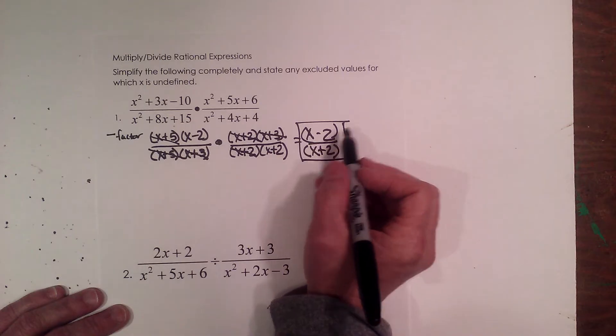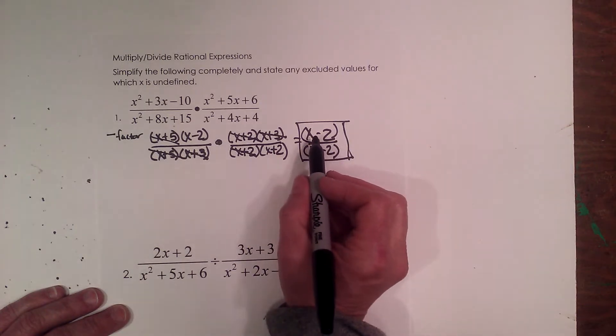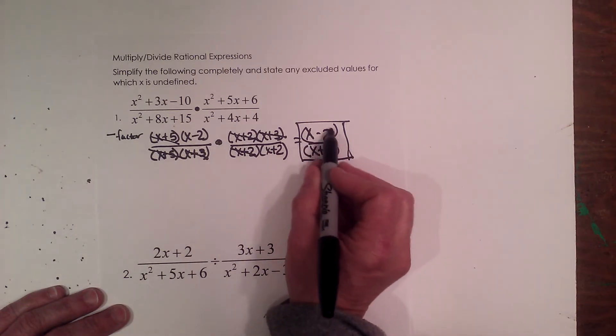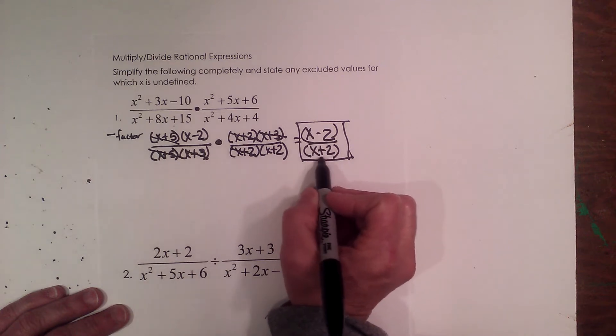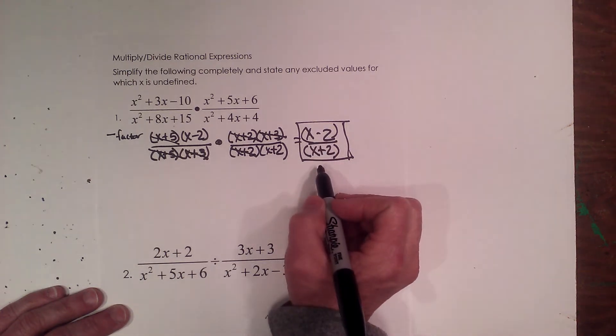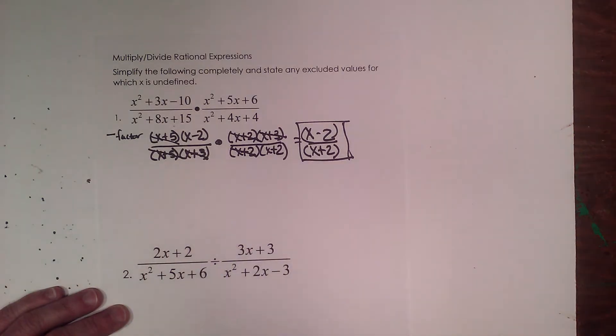And the way you can check it is pick a number. For example, if x is 10, 10 minus 2, that would be 8 on top, 10 plus 2, that would be 12 on the bottom. Those two values are not equal, therefore you cannot cancel them out.